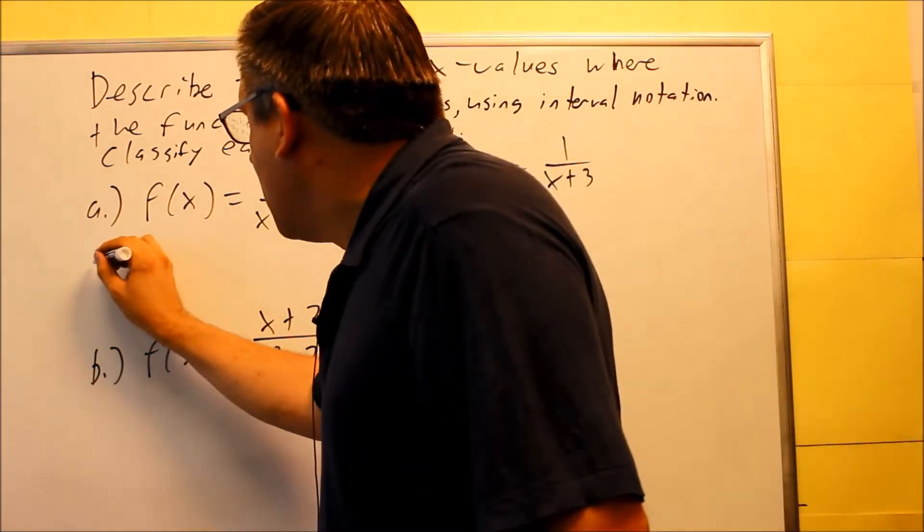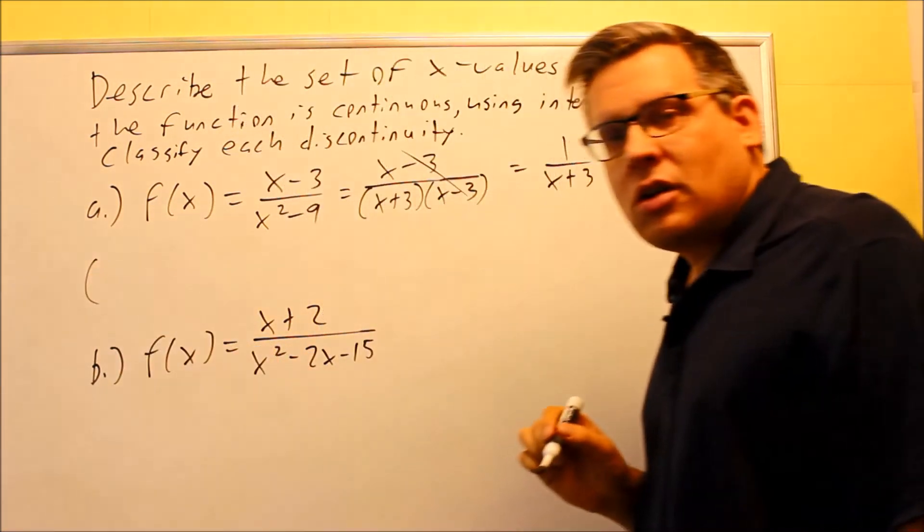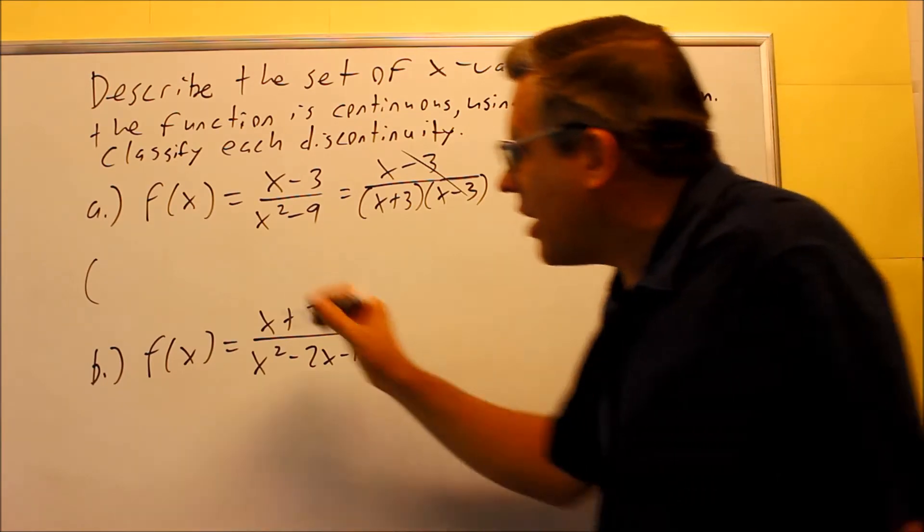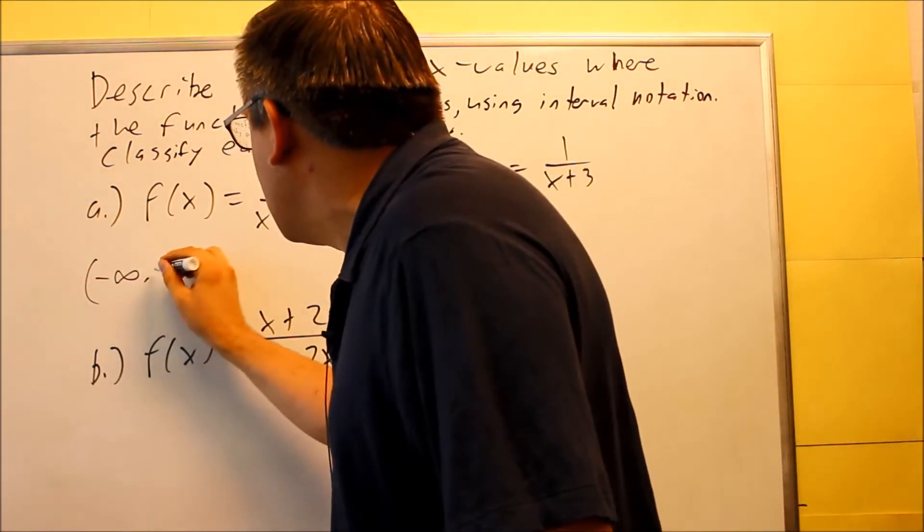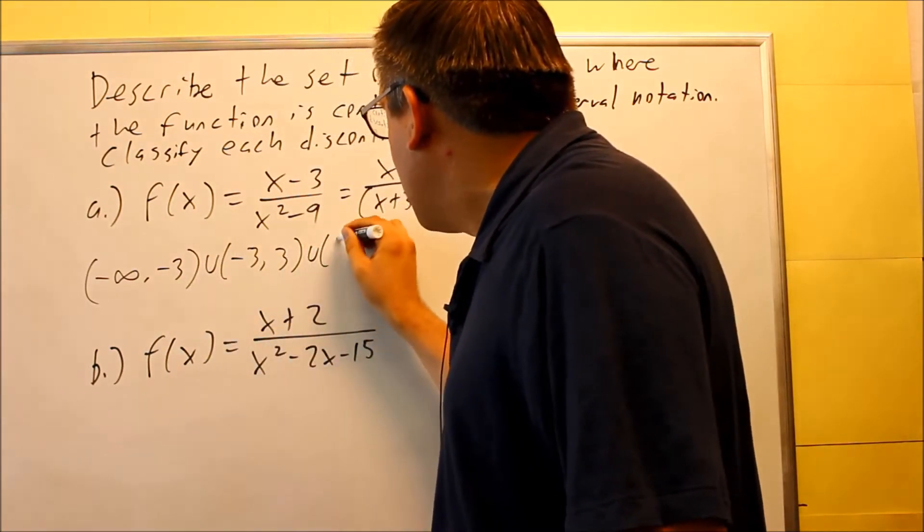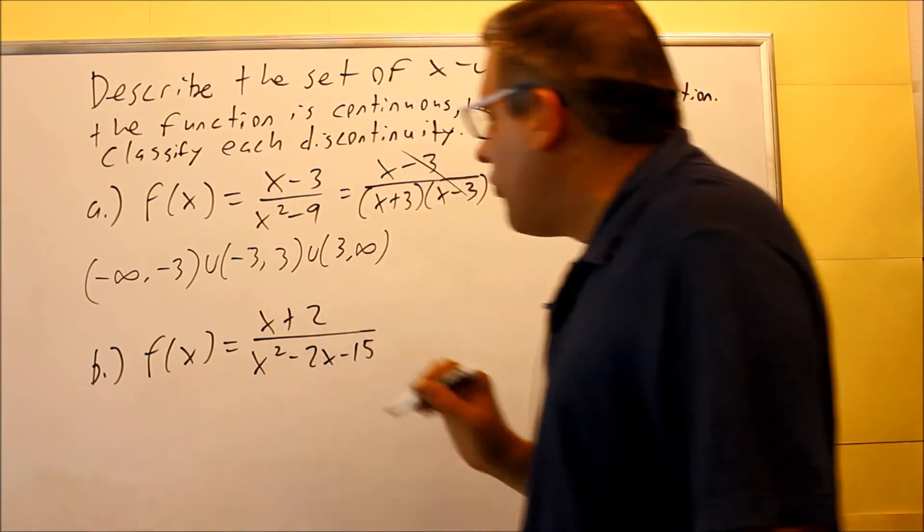So if you're trying to find the interval where it's continuous, it's basically everything except for negative 3 and 3. So how you write that, you'll go negative infinity to negative 3, negative 3 to 3, and then from 3 to infinity.